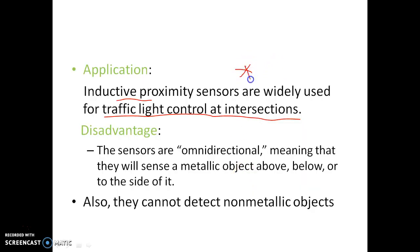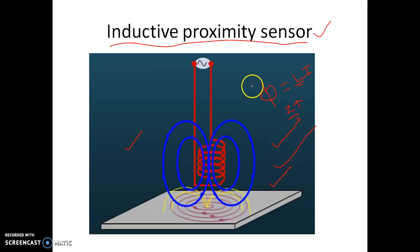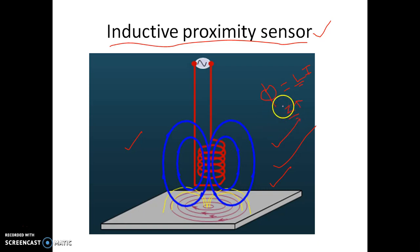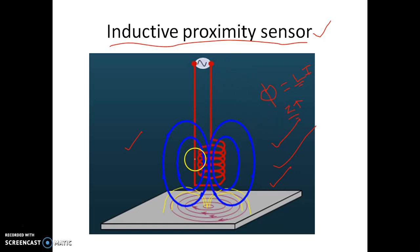When a vehicle passes over the loop — that is, when a vehicle passes over this coil — the impedance of the sensor will change, and that will trigger the circuit to change the traffic light. So, the main application of the inductive proximity sensor is in traffic light control.